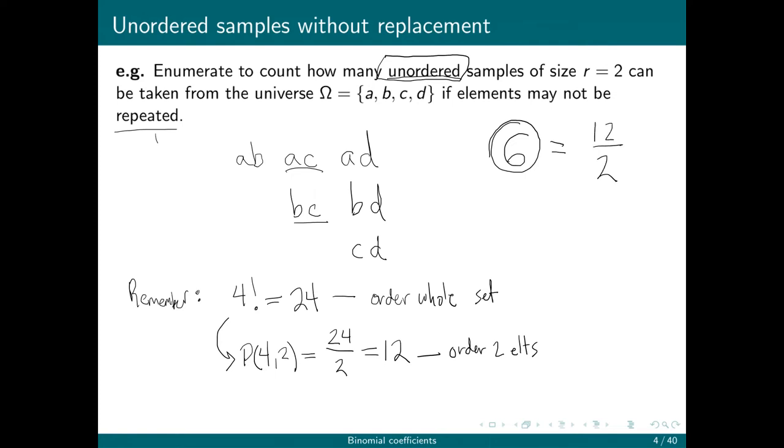That's exactly how it works. Not only are we dividing by the number of ways to order the stuff that we don't care about, we're also dividing by the number of ways to order the stuff that we do care about. So that's how we go from 24 total orderings to 12 partial orderings to 6 samples with no order. We divide by 2—2 is both the number of ways to order the stuff that we don't care about and the number of ways to order the stuff that we do care about.